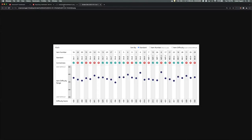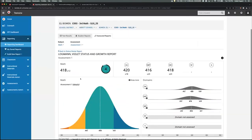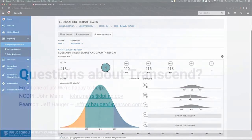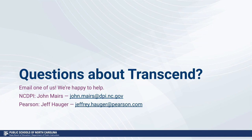That covers the reports and the intelligent test blueprint in SchoolNet — what it would look like if you were to sign up. As mentioned, Transcend is exiting the pilot stage next school year and will be available as part of the Home Base opt-in process, priced at four dollars per ADM in grades three through eight. Thanks everyone.